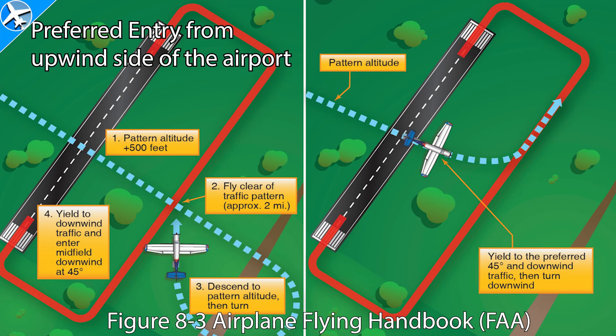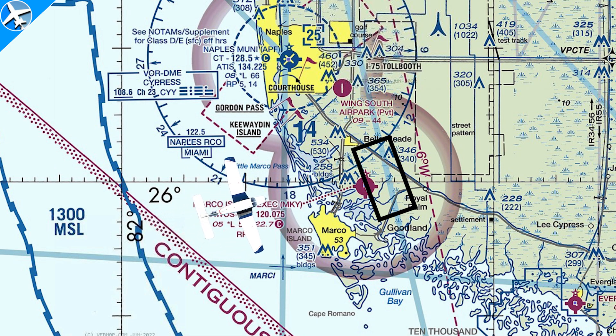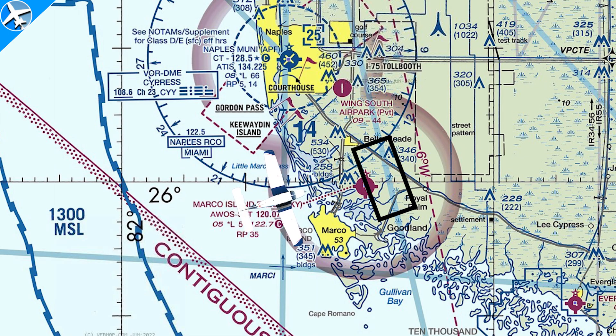Here are two ways to enter the airport traffic pattern. We're going to talk about both, but we'll start with the preferred entry from the upwind side of the airport on the left. Building off the previous video, the same airport and runway will be used for consistency.